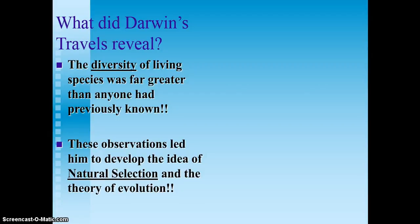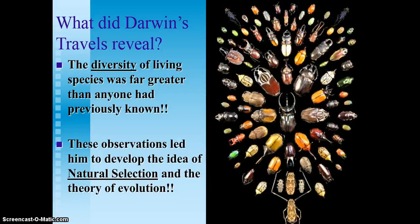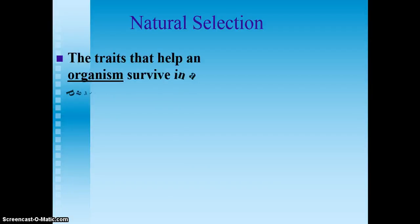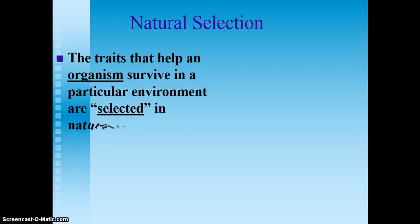That helped him to develop the idea of natural selection and ultimately the theory of evolution. This picture here is showing you a small number of the different types of beetles that exist. Natural selection is the idea that the traits that help an organism survive in a particular environment are selected.